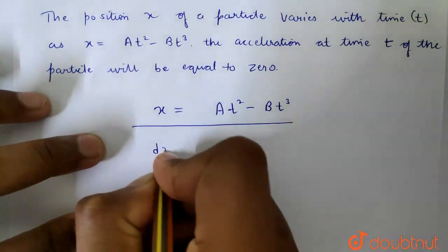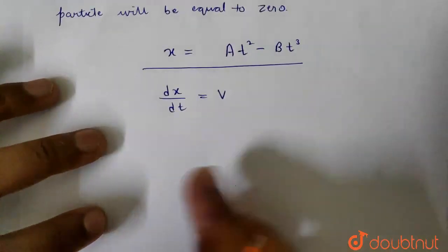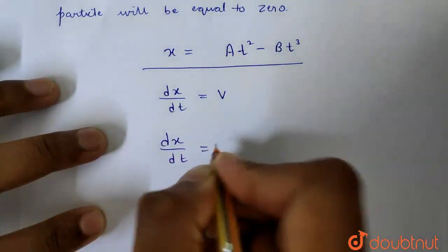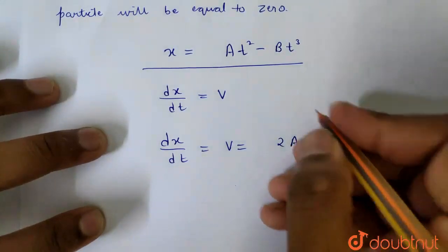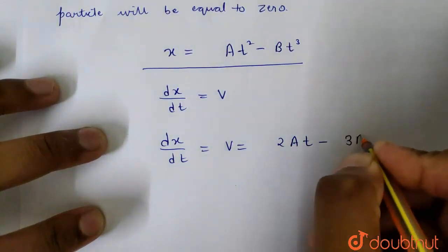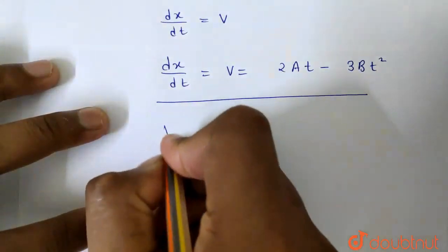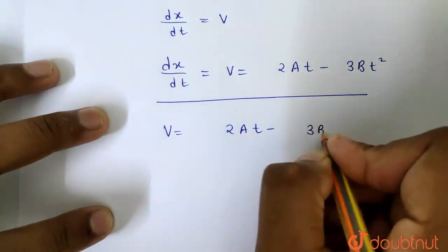We know that dx by dt is the velocity. What do I do? I will differentiate it. So dx by dt will be V. At squared minus Bt cubed differentiated is 2At minus 3Bt squared. So the velocity as a function of time is 2At minus 3Bt squared.